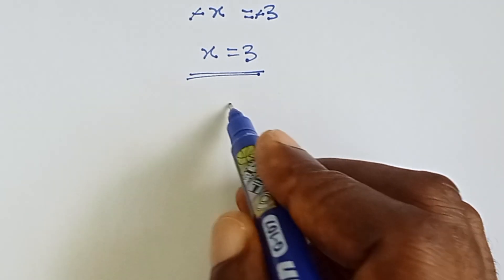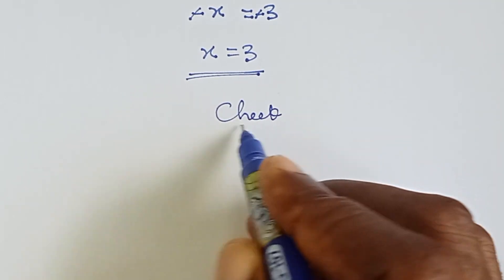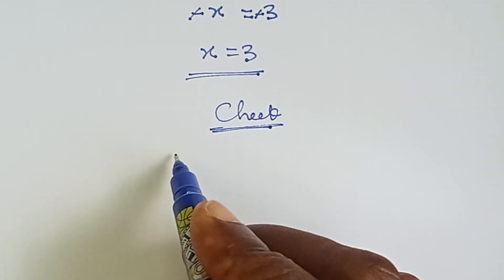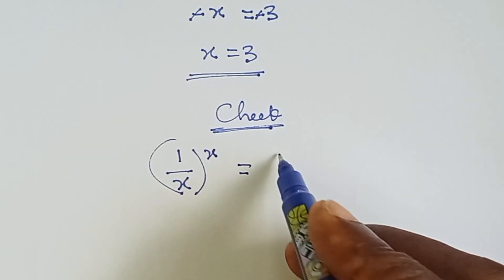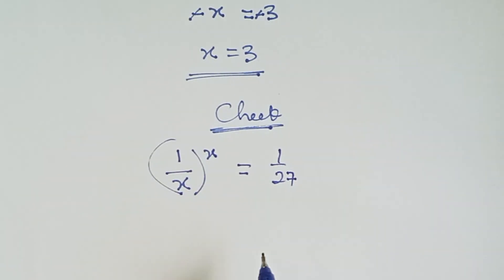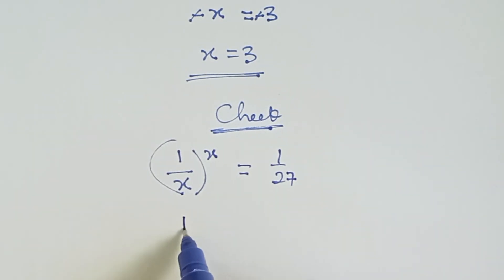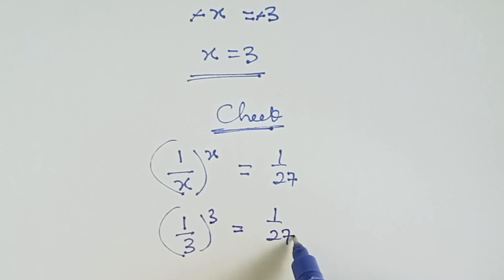Now let's check if we are correct. We have 1 over x raised to the power x equals 1 over 27. Our x is 3, so we have 1 over 3, raised to the power 3, equals 1 over 27.